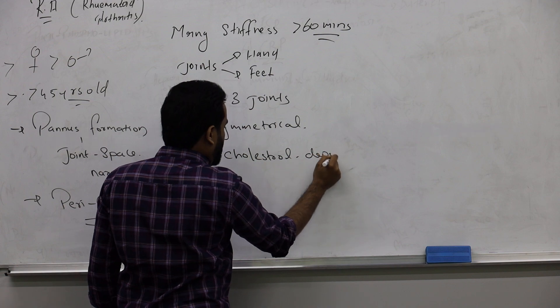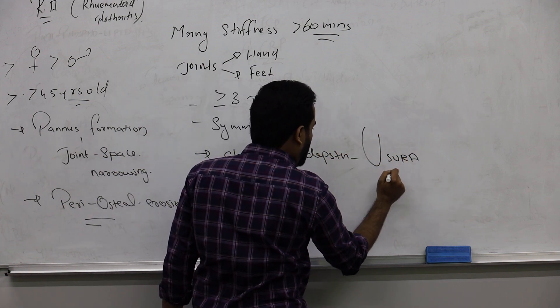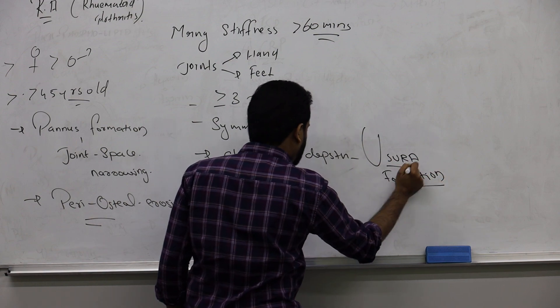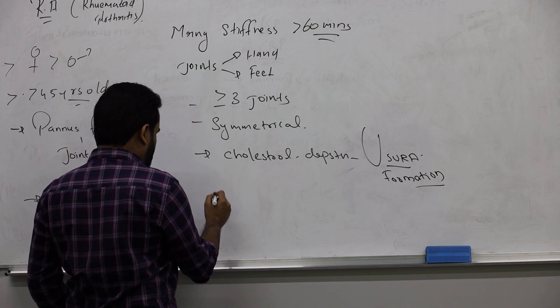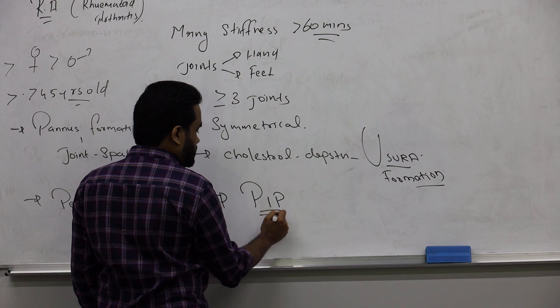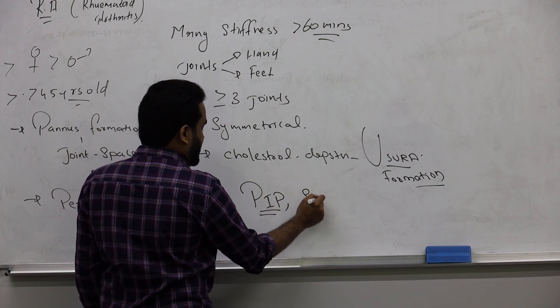You can see cholesterol deposition. In x-ray you can see some erosion, erosion formation. Mainly remember, you will have affection of PIP, proximal interphalangeal joint.